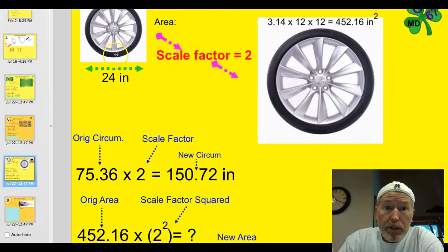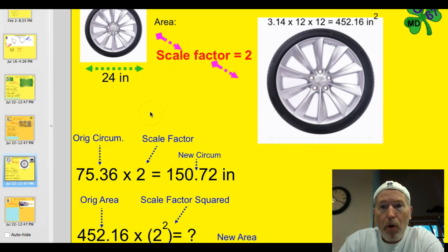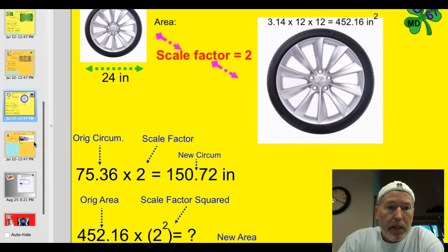And obviously, if we're using a scale factor of 2, if the diameter of this one is 24, the diameter of this other one, I thought I had it there, I guess I don't, would be 48. Let's keep rolling.